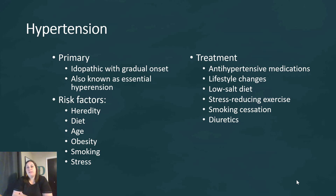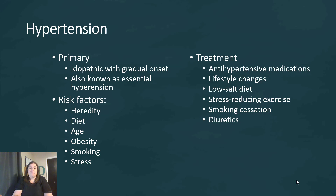When we look at hypertension, we focus on primary or essential hypertension, which is idiopathic — meaning there's an unknown cause. However, it is gradual and happens over time. Risk factors include heredity — if many in your immediate family have hypertension, you may carry genes contributing to it. Diet is also a factor: a high fat, high salt diet can affect blood pressure. Other risk factors include age, since this is a degenerative disease, as well as obesity, smoking, and stress.